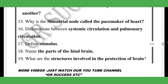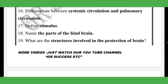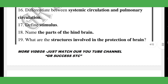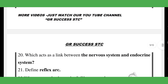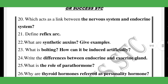Question 7: stimulus. Question 8: parts of the brain. Next: structures involved in the protection of the brain — very important question. Nervous system and endocrine system differences, reflex actions. Synaptic transmission is the most important question.